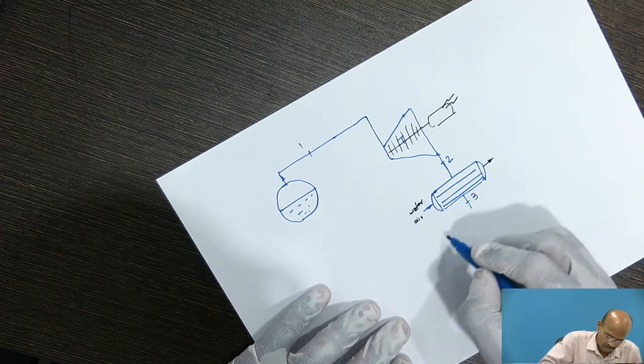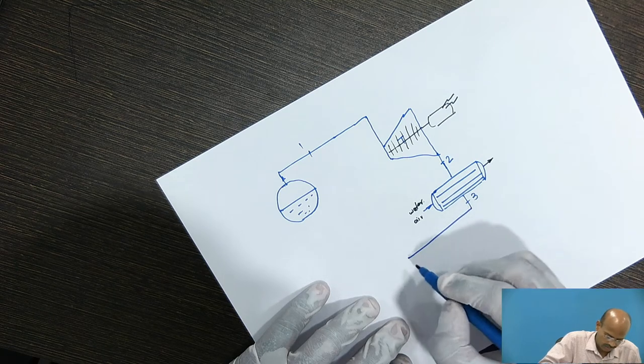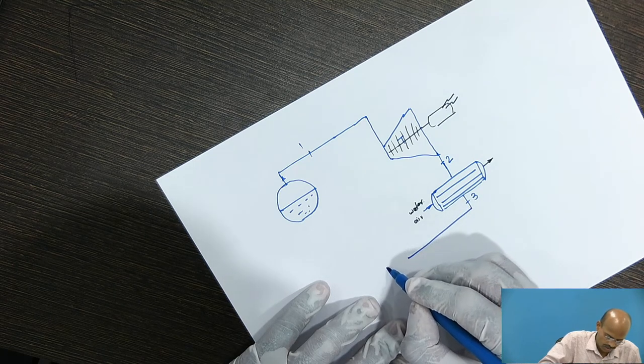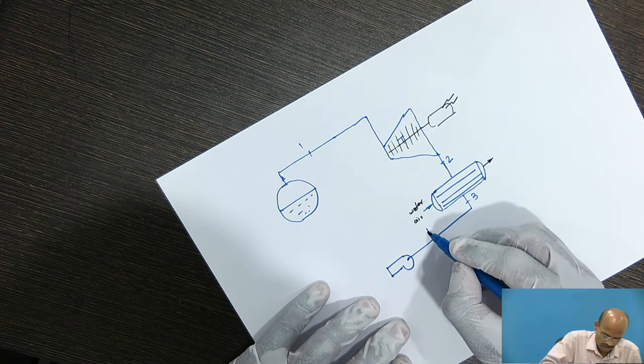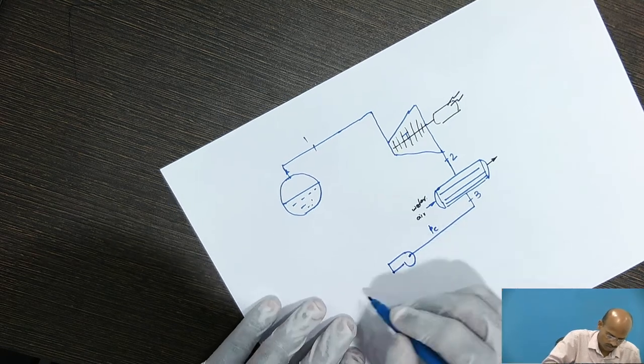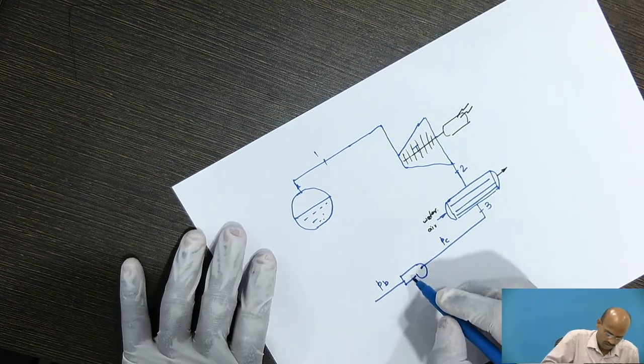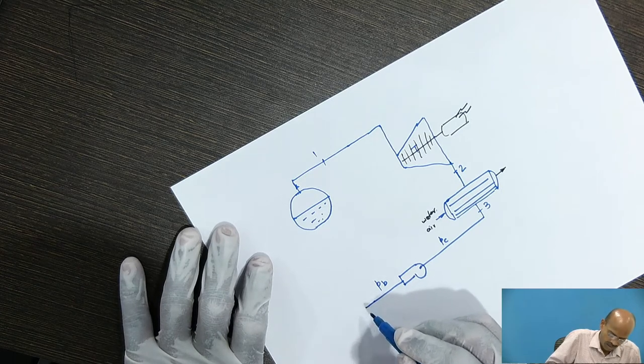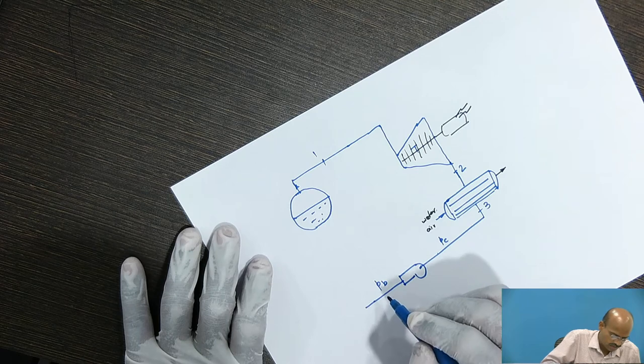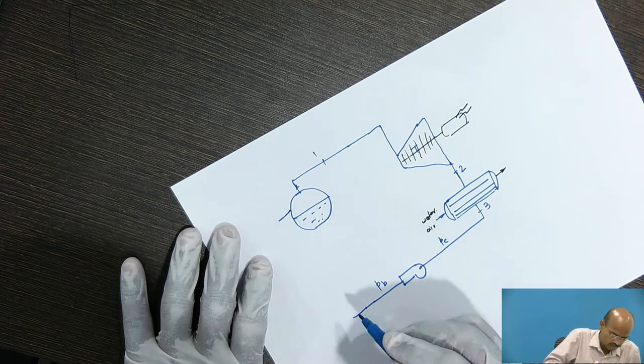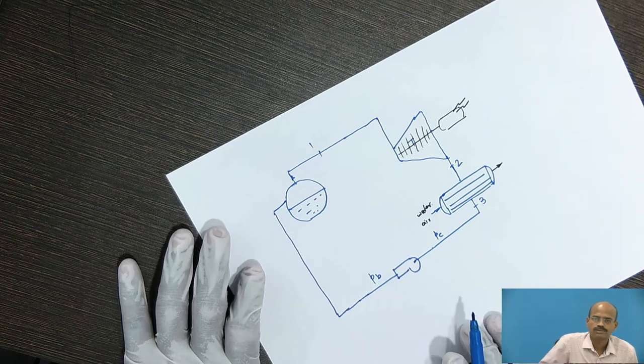Now, this low pressure liquid is pressurized by the liquid pump from condenser pressure to boiler pressure. So, this hydraulic pump increases the water pressure from condenser pressure to boiler pressure and it supplies to the boiler.